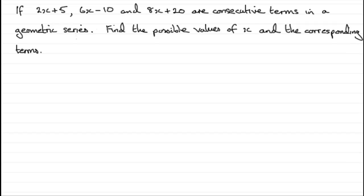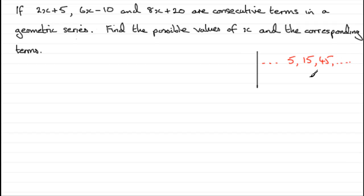When you get problems on consecutive terms, you've got to work something like this. Let's just imagine that we have some consecutive terms in a sequence — say we've come across a number like 5, the next number is 15, and the next number is 45, and then the sequence carries on. Clearly here we're multiplying each term by 3, so it's a geometric sequence.